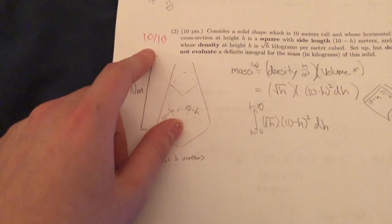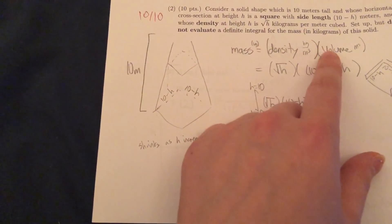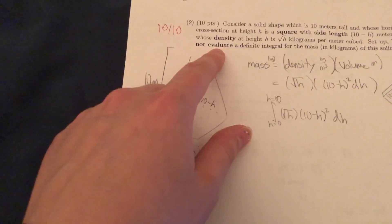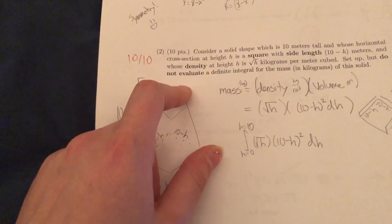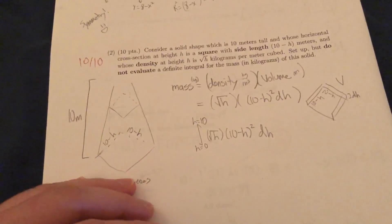And it looks like here I got four points. Yay. Looks like it's a 3D one. Consider a solid shape set up again, but do not evaluate. So they do this thing where they don't want you to do mindless math. So you don't have to evaluate a lot of problems. Just have to set up the stuff.